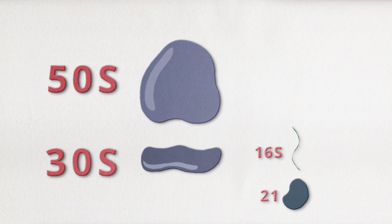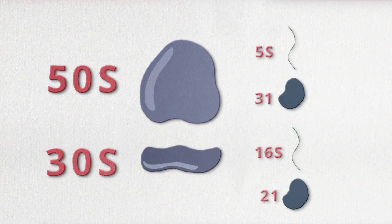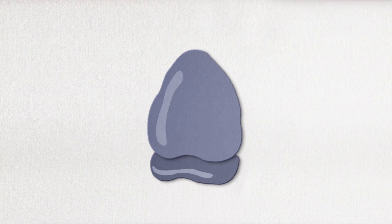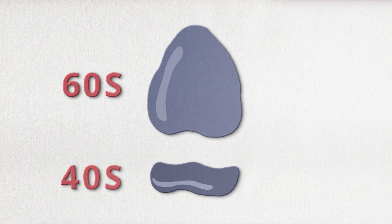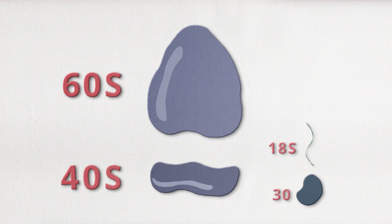The 50S subunit contains 5S RNA and 31 proteins. Eukaryotes, the organisms with 80S ribosomes, have smaller subunits of 40S and larger subunits of 60S. The 40S subunit consists of 18S rRNA and 30 proteins, whereas the larger 60S subunit contains three types of rRNA molecules.